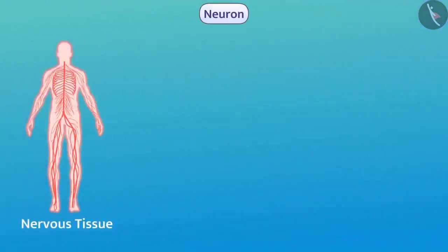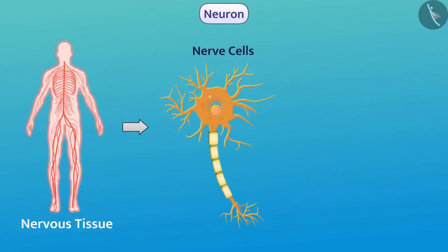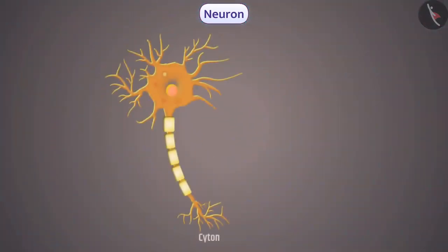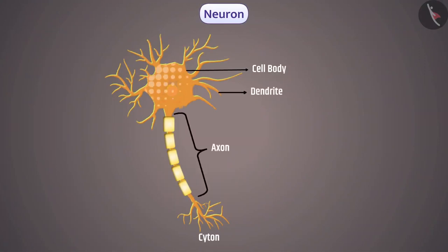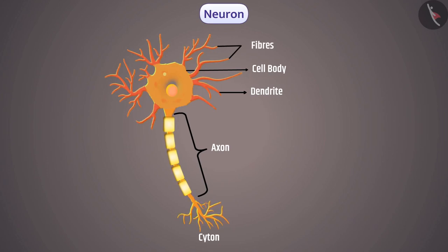Nervous tissue is formed from the network of many nerve cells, also called neurons. A neuron is a structural and functional unit of the nervous system. A neuron consists of a cell body, dendrite, and axon. The cell body is shaped like a star, from which small fibers — dendrites and nerve axon — originate.